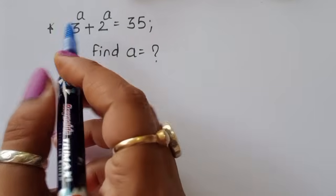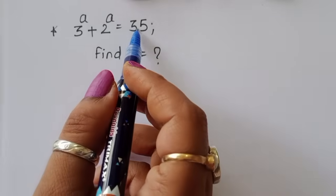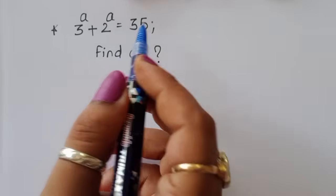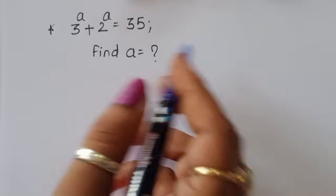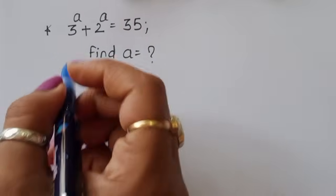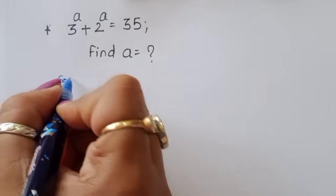The question is: given 3^A + 2^A = 35, we have to find out the value of A. How can we find out the value of A? Let's see the solution.